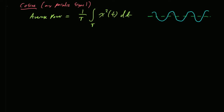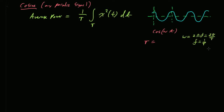For a cosine of omega t, let me set up the average power. The period T equals 2π over omega, since omega equals 2πf and f equals 1/T. So the average power would be 1 over T times the integral from 0 to 2π/omega of cosine squared of omega t. You could use a table of integrals or a calculator to get a number.